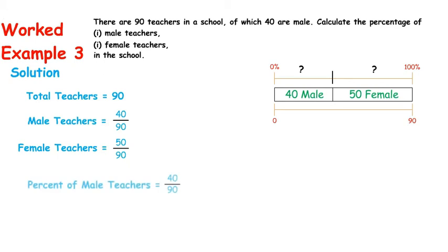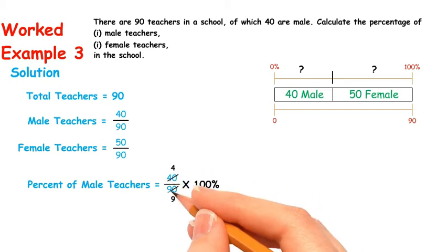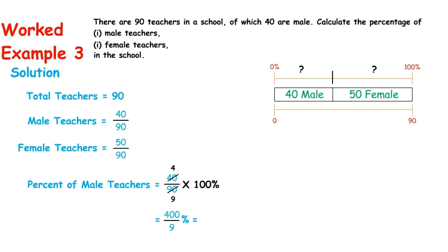To find out the percentage of male teachers, we will multiply by 100%. 10 into 4 equals 40, 10 into 9 equals 90. 40/9, or 44 and 4/9 percent.